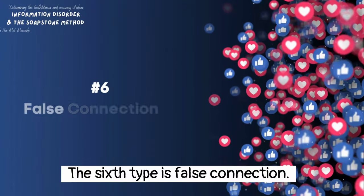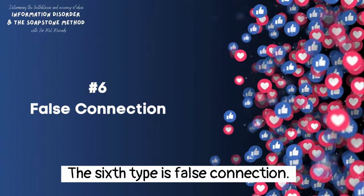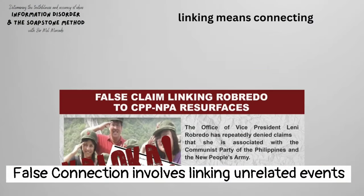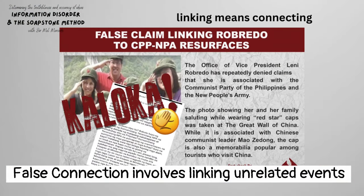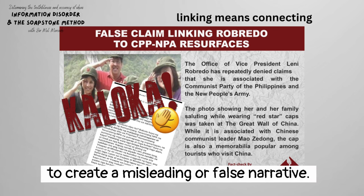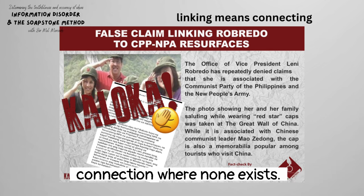The sixth type is false connection. False connection involves linking unrelated events, individuals, or information to create a misleading or false narrative. It aims to deceive the audience by suggesting a connection where none exists.